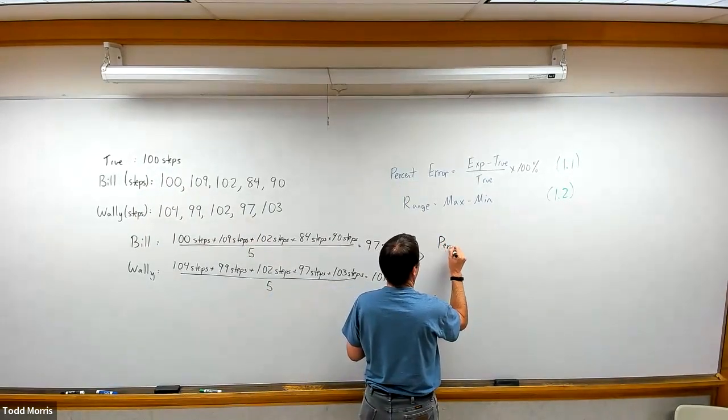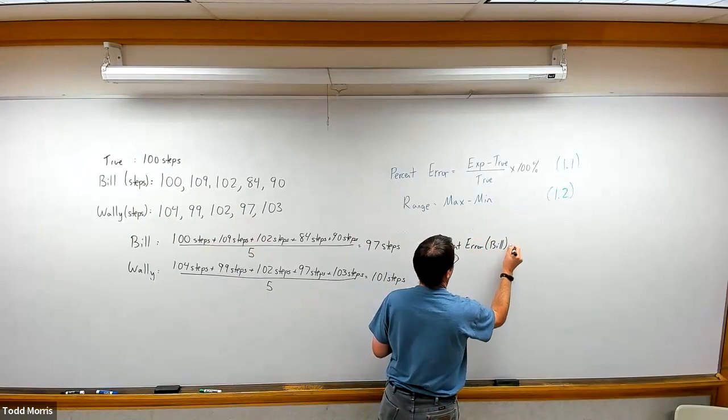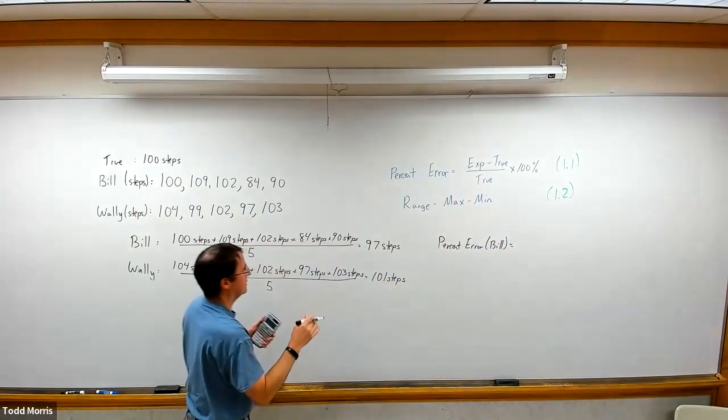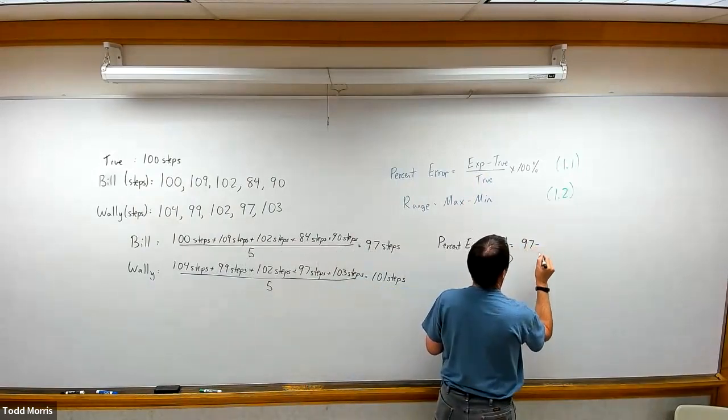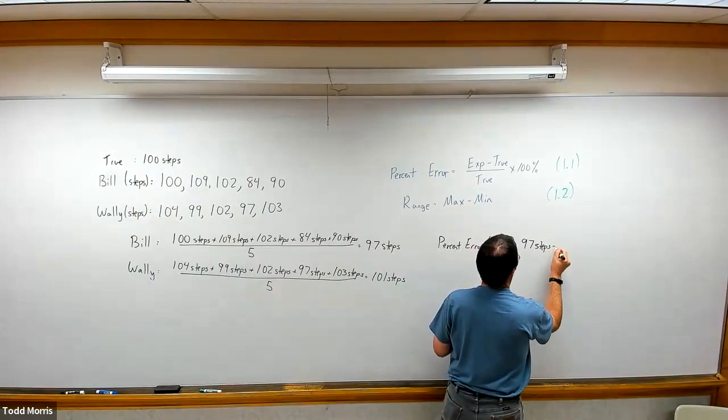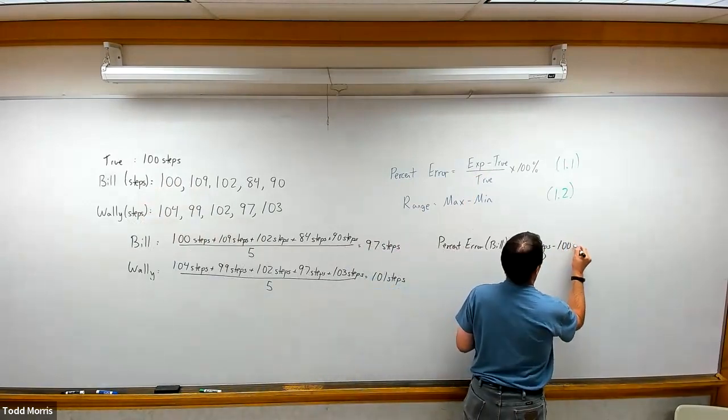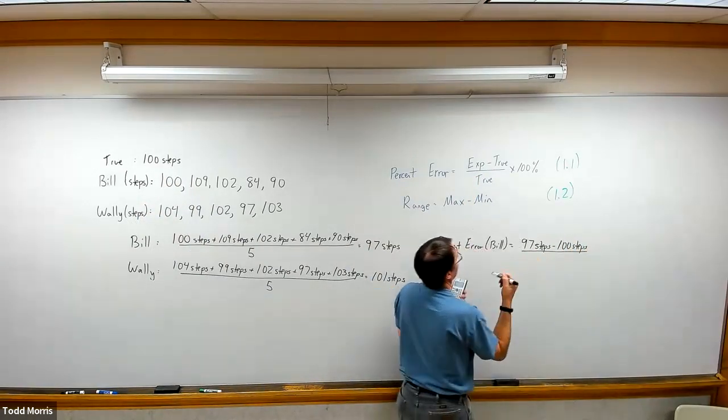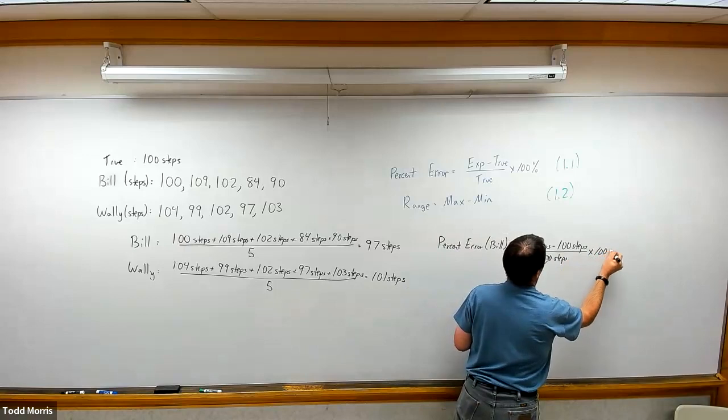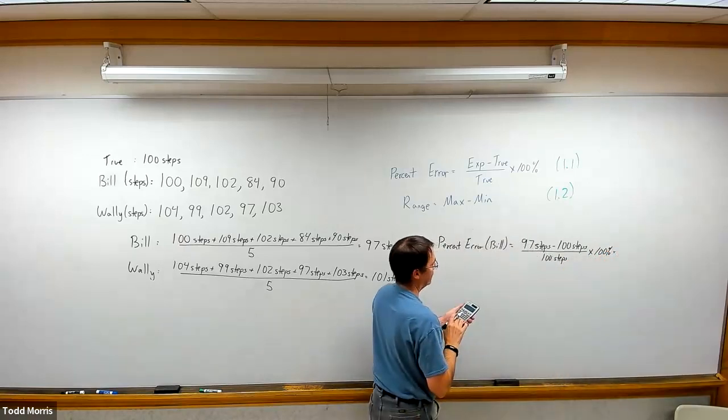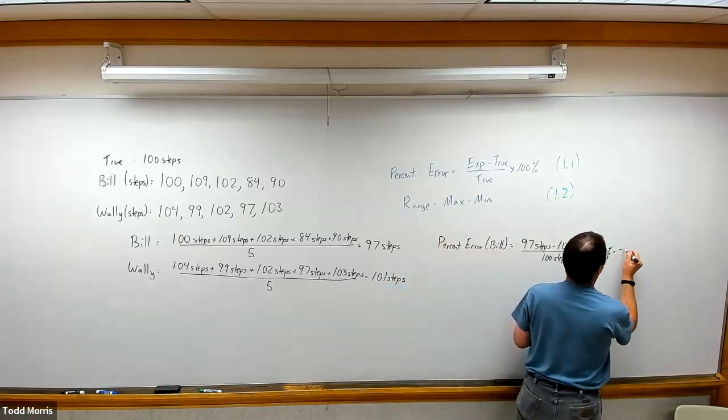Once again, with percent error, we're going to take for Bill, take our experimental value, which is going to be the average number, 97. 97 minus 100, divided by 100, gives us the value negative 0.03.